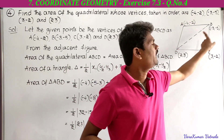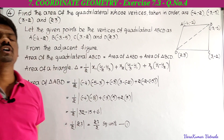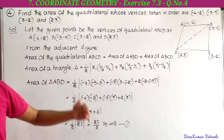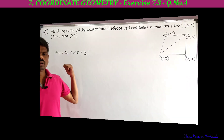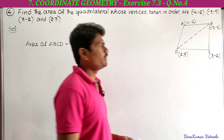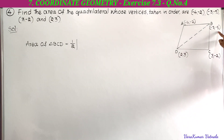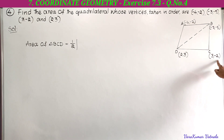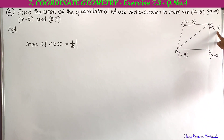Next we have to find the area of triangle BCD. By adding the two triangle areas we can get the area of quadrilateral ABCD. The vertices for triangle BCD are: B(−3, −5), C(3, −2), and D(2, 3). Using these three vertices we will find the area of triangle BCD.